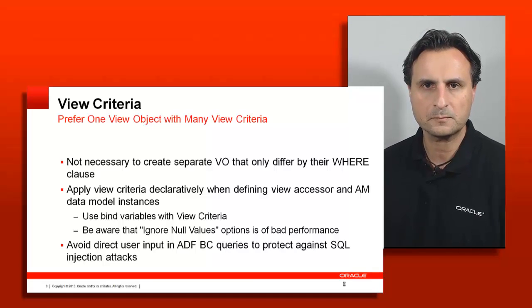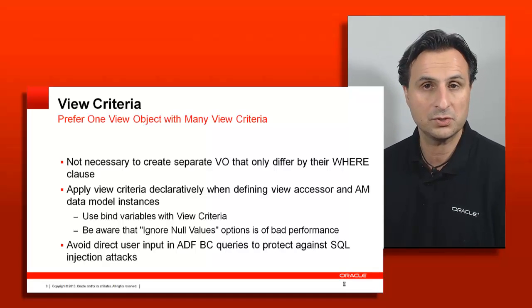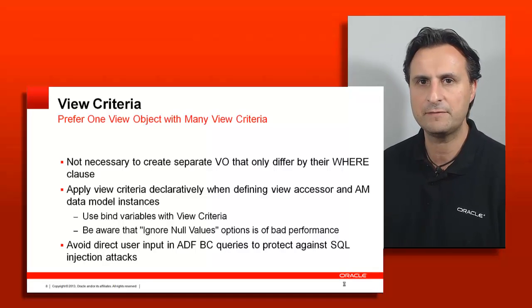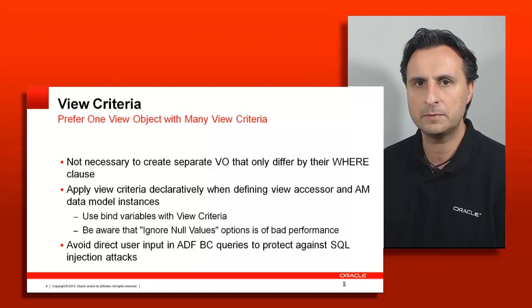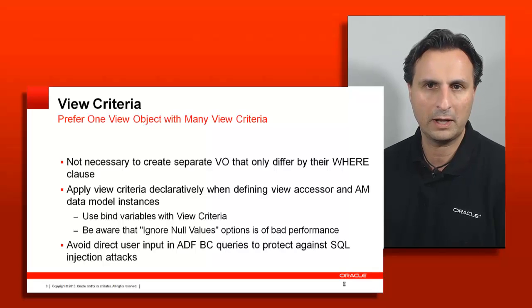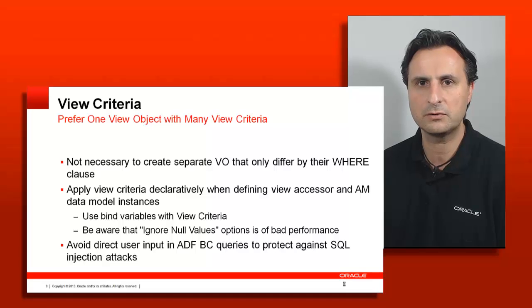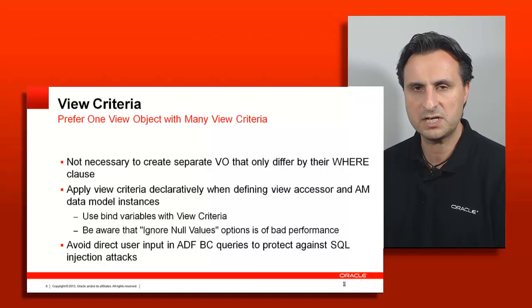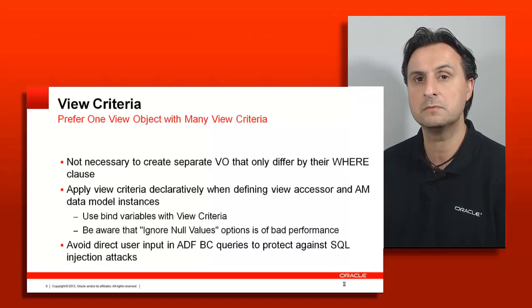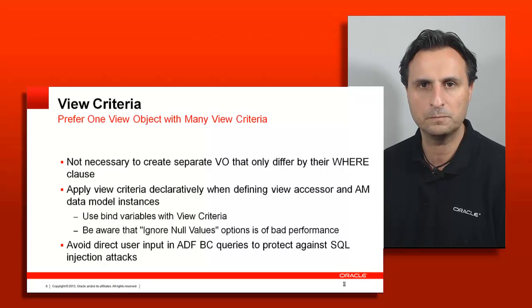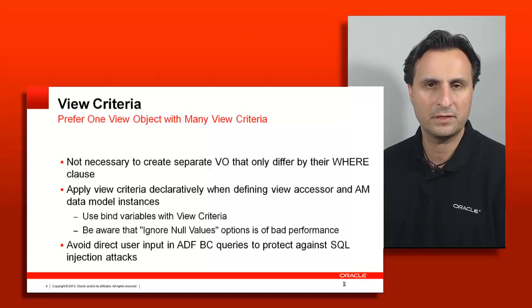Another hint: when you create a view criteria with bind variables, we recommend that you don't accept null values. By default it will ignore null values, which means if a user doesn't provide any value to a bind variable it will just query with a null value — effectively a query for all records — which is bad for performance. Additionally, if you use bind variables with view criteria, SQL injection won't happen because bind variables protect you from that. If you want to learn more about protection through bind variables, I recommend going back to the ADF TV session I recorded about security.